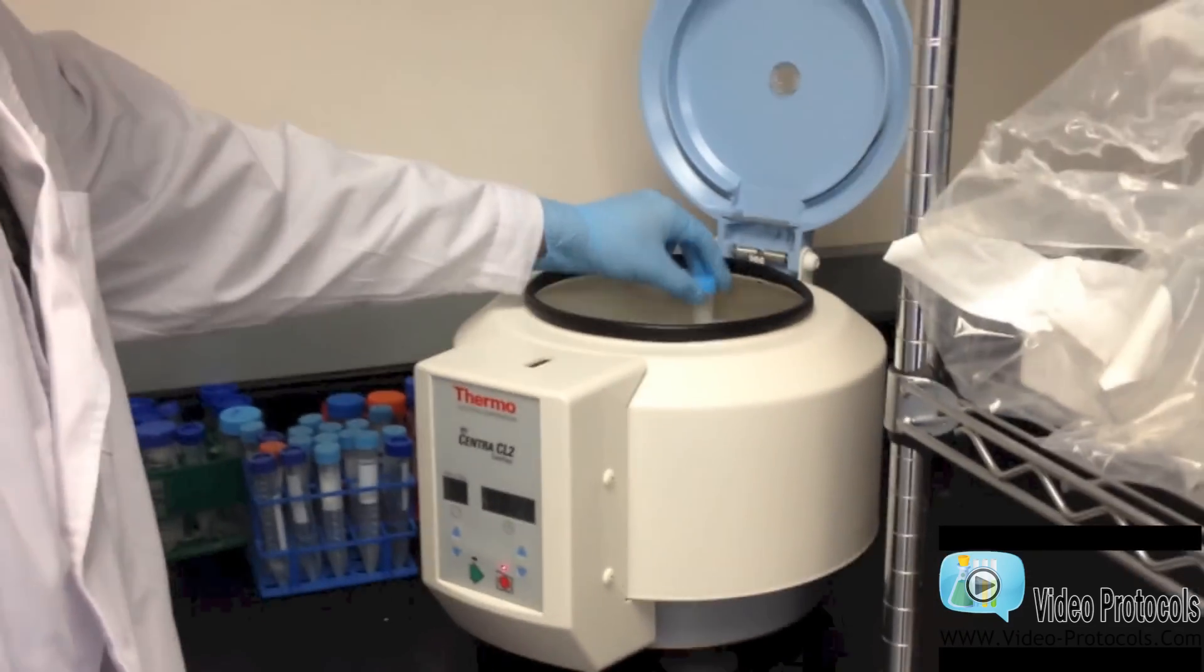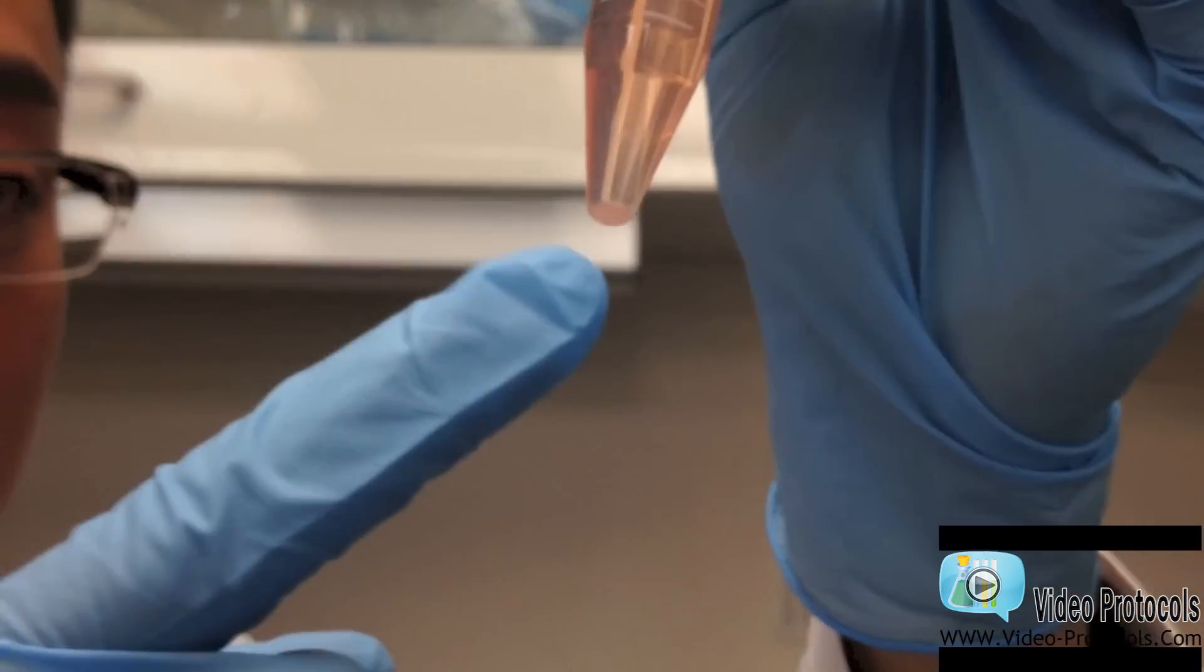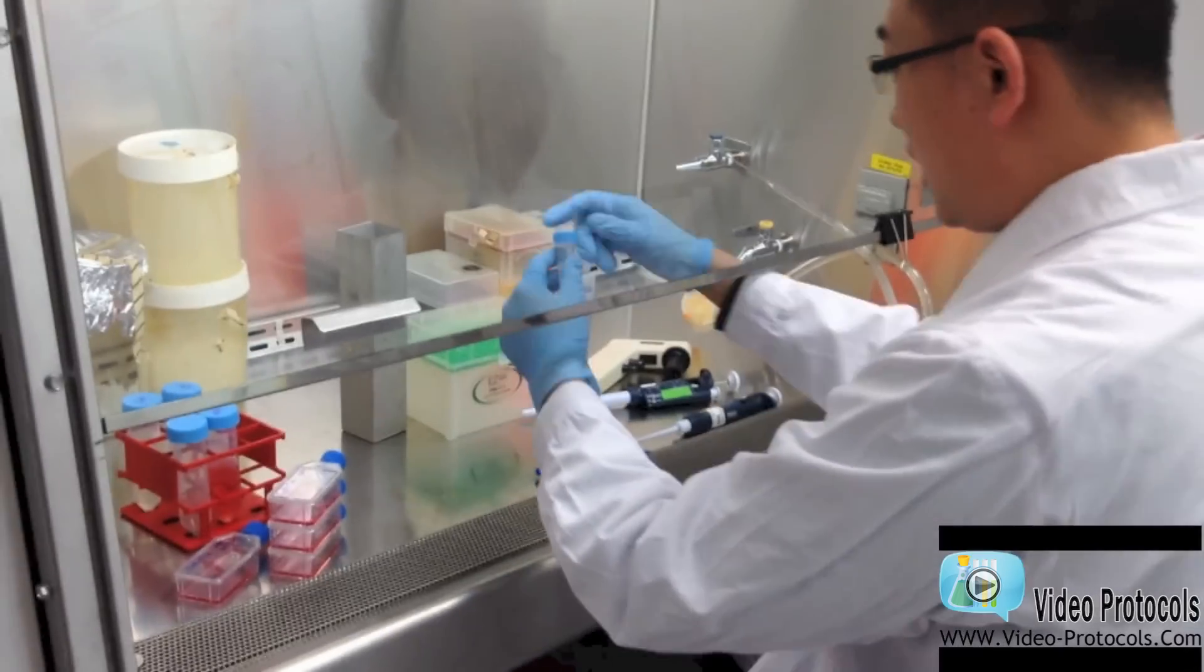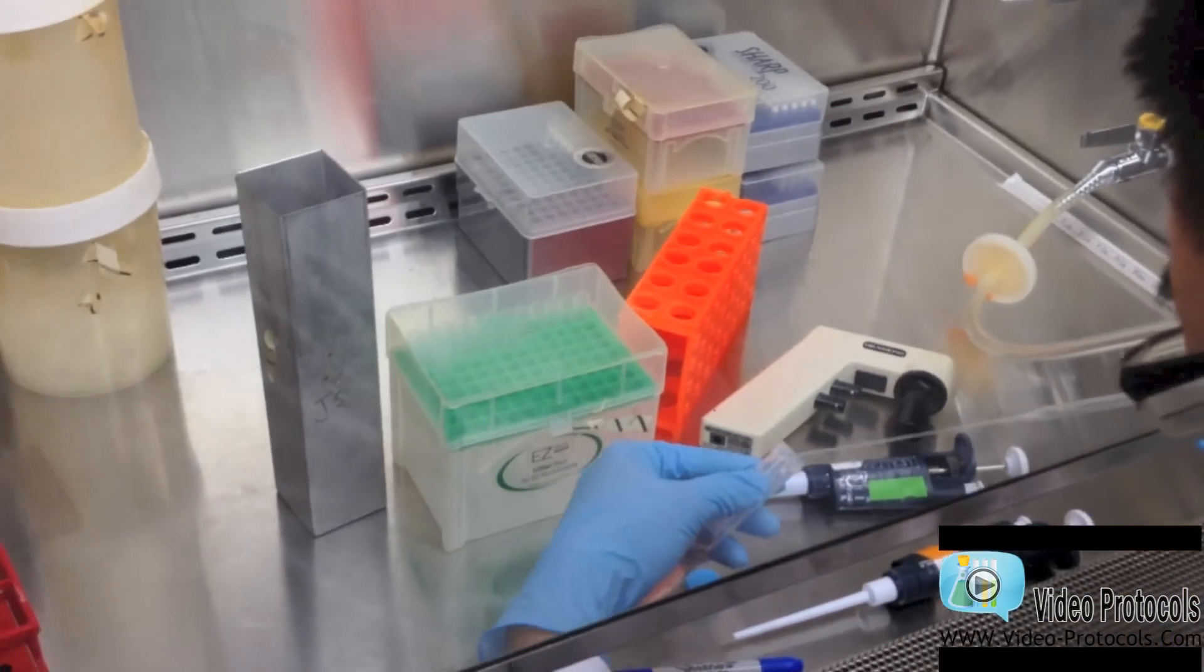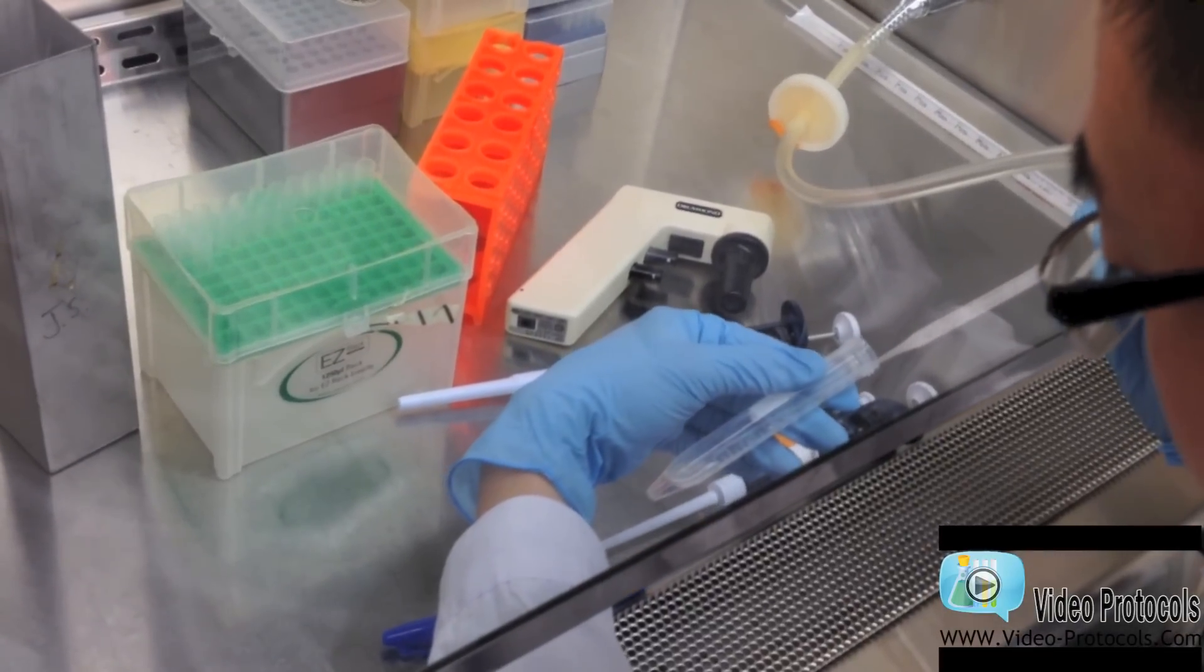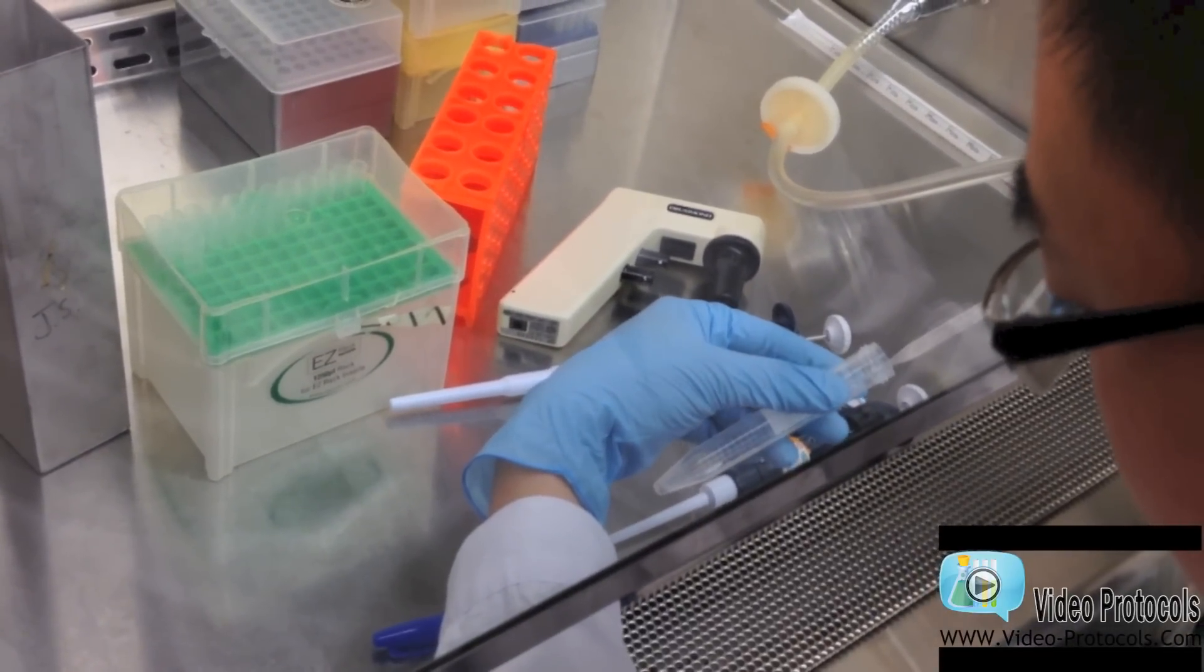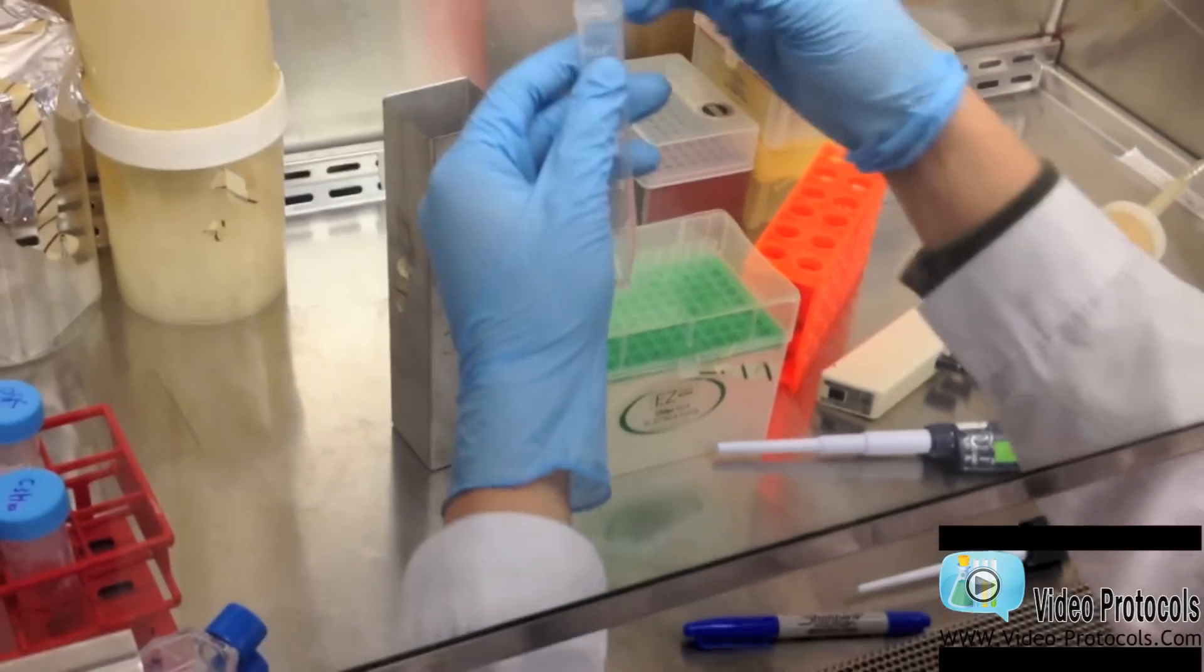After the centrifuge is done, you take out the cells and you should be able to see there is a pellet down. That's all the cells basically. I am going to aspirate the media and the trypsin. Because again, trypsin is not good for cells. And you need to make sure that the pellet is not sucked out.